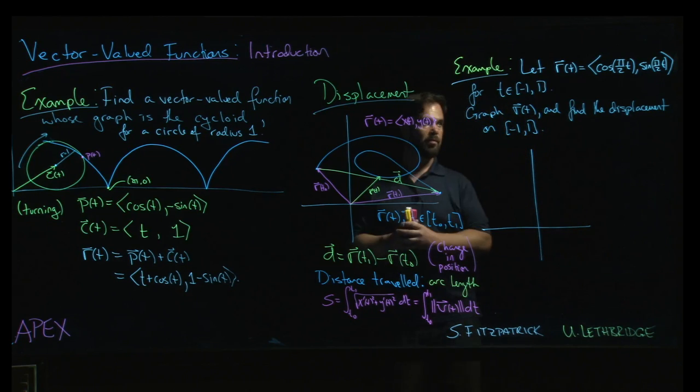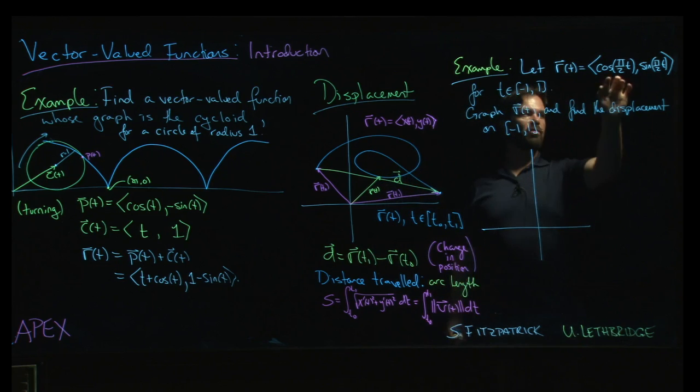So here's an example involving displacement. First, the question asks us to graph this particular vector-valued function. We have cosine and sine, so we're looking at a circle, a unit circle in fact, but perhaps not the entire circle.